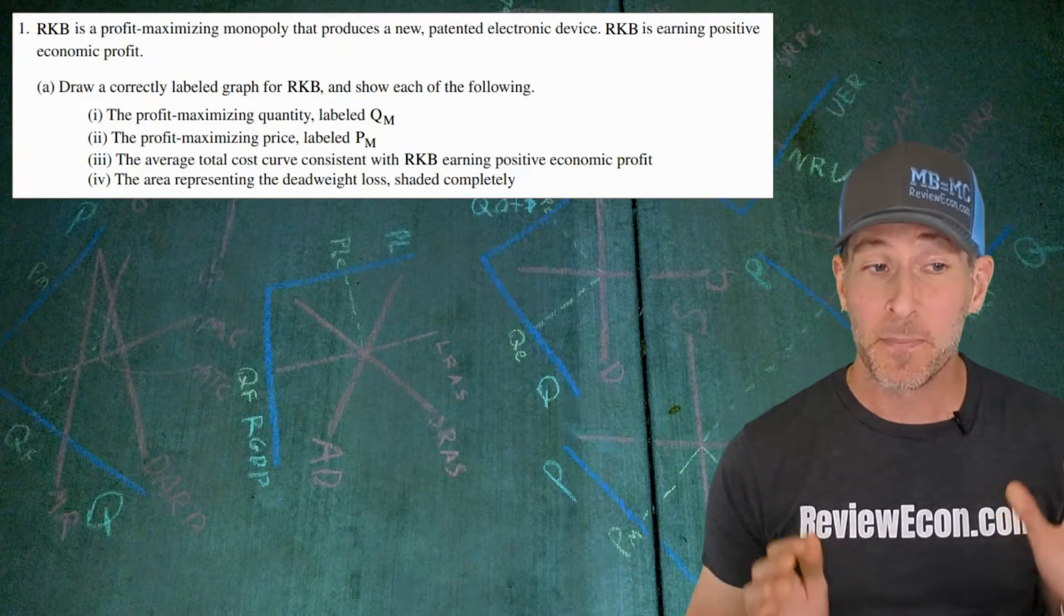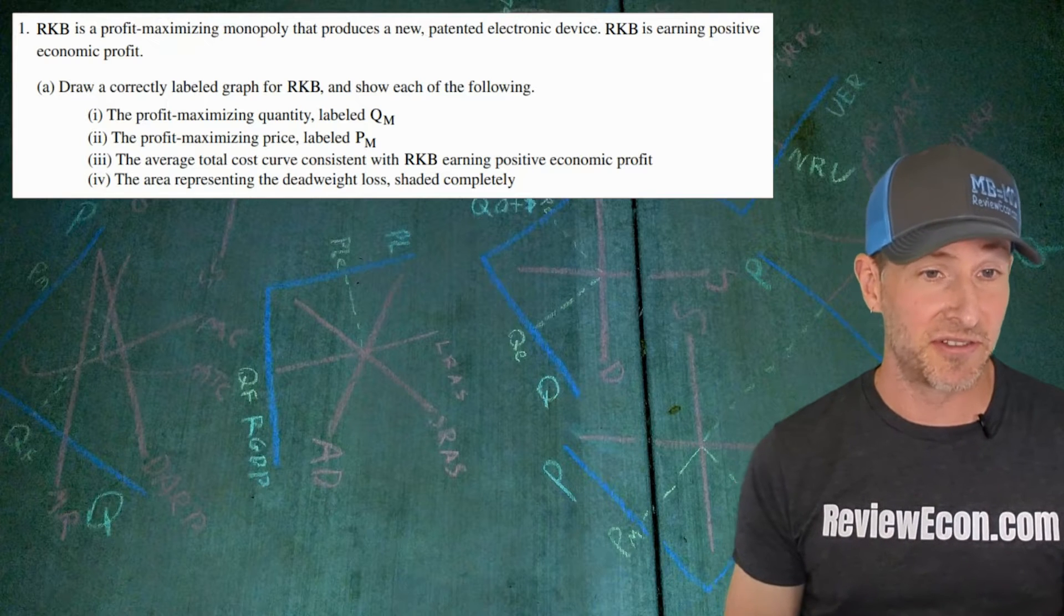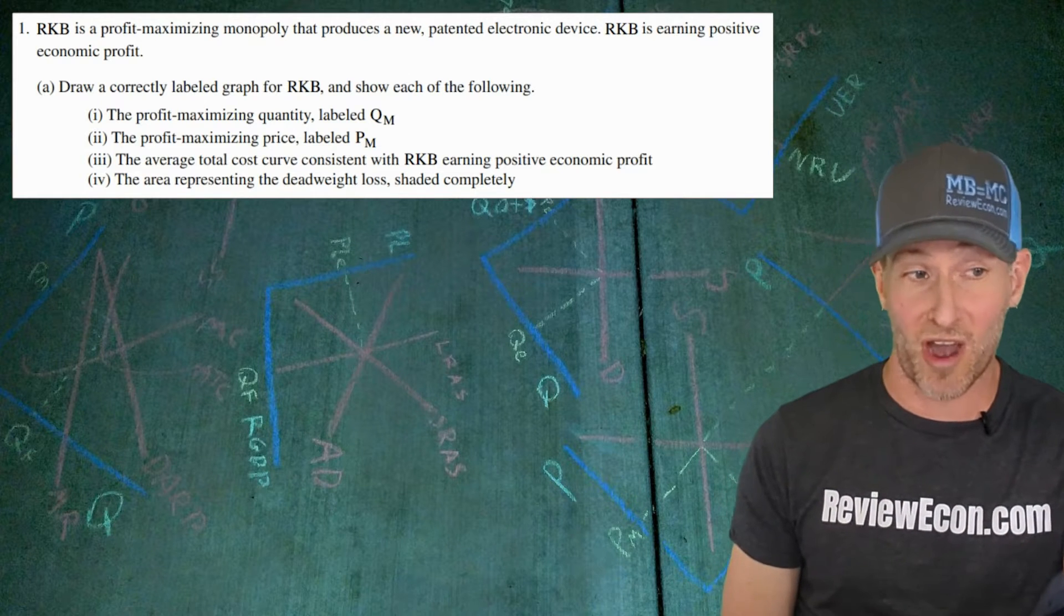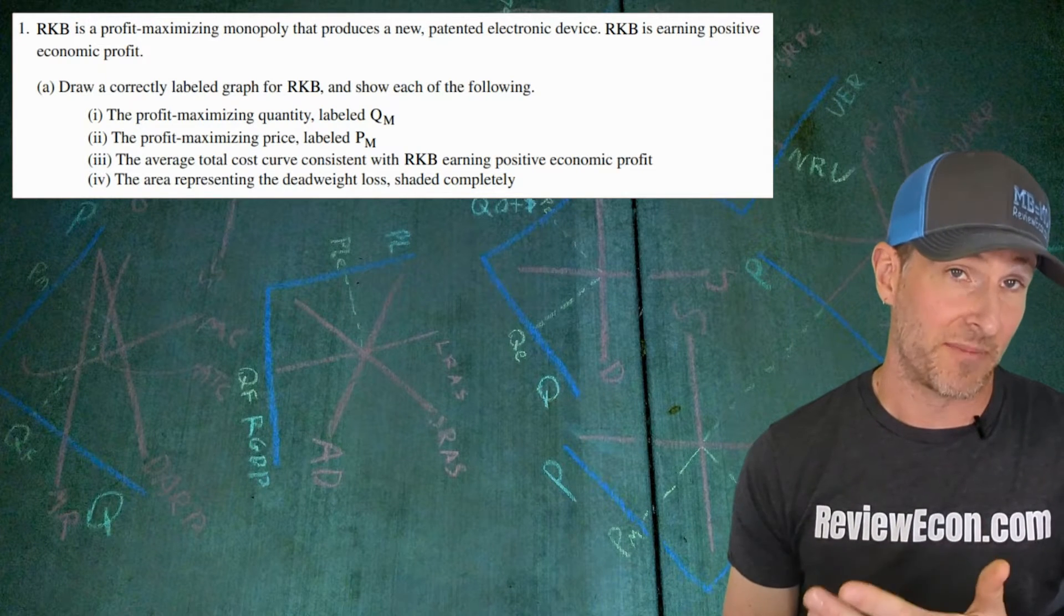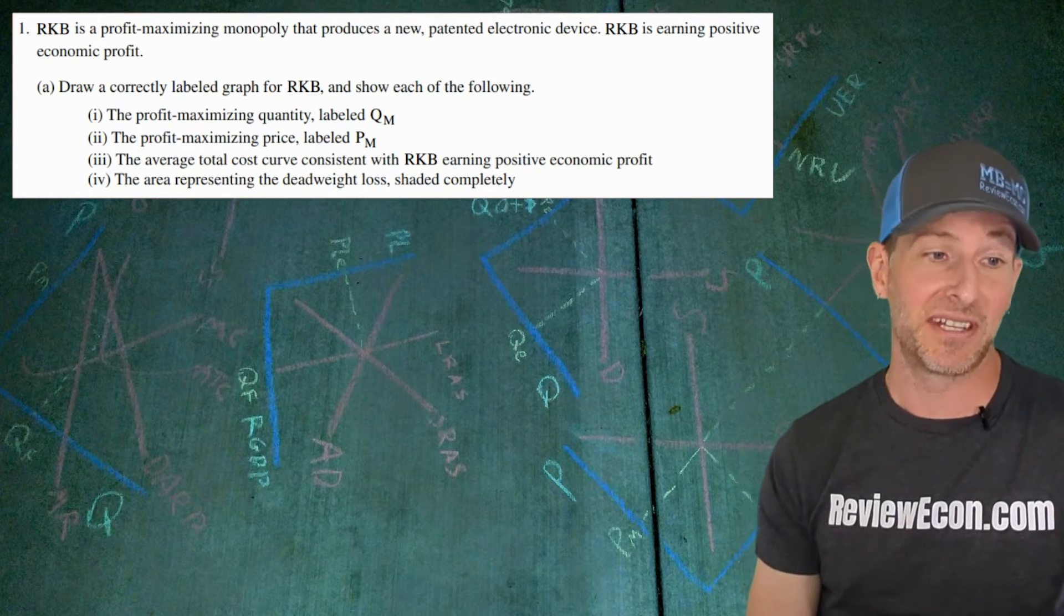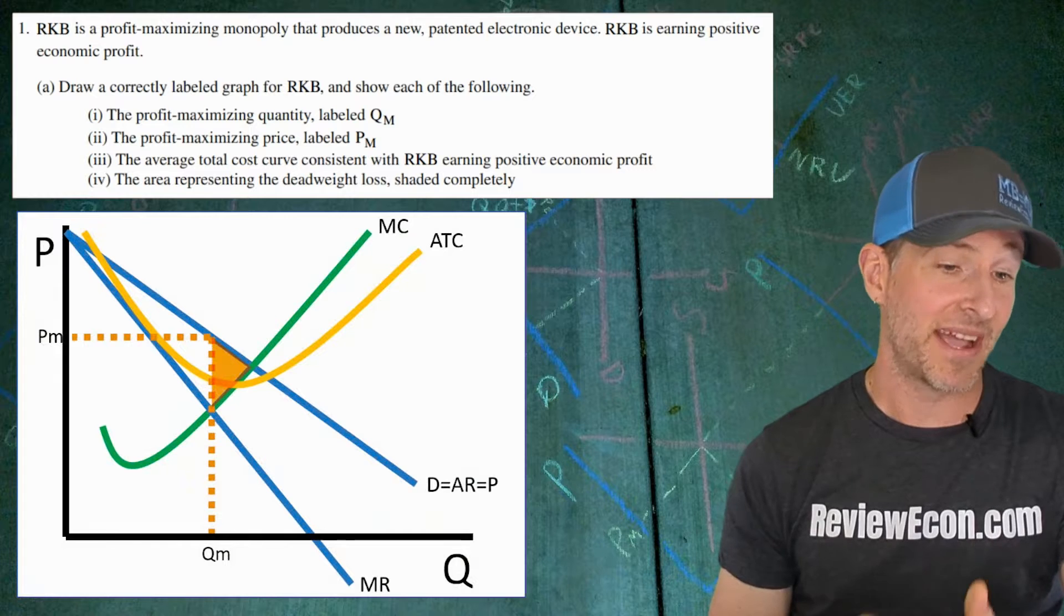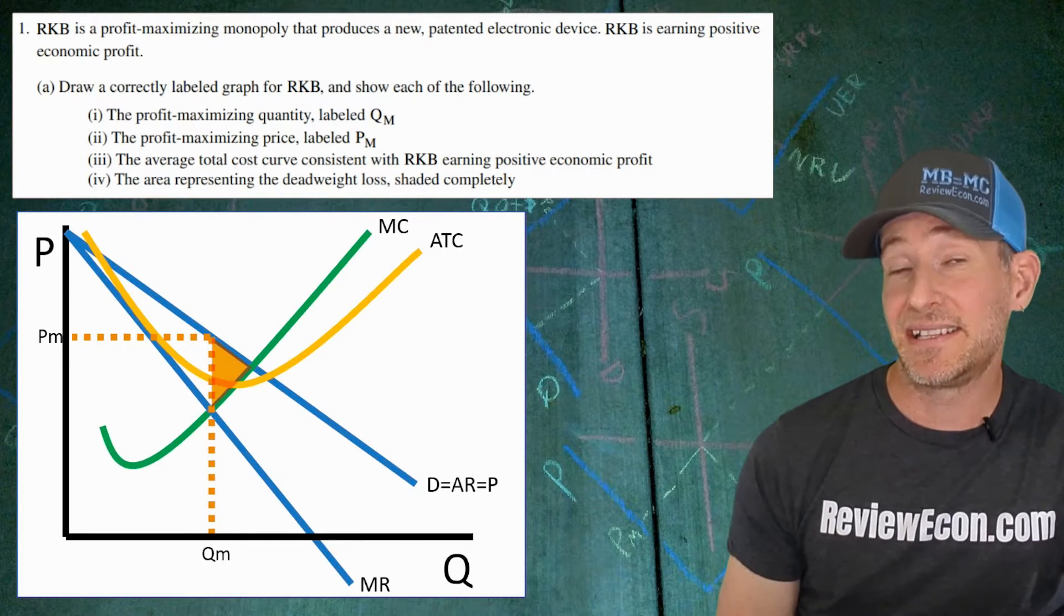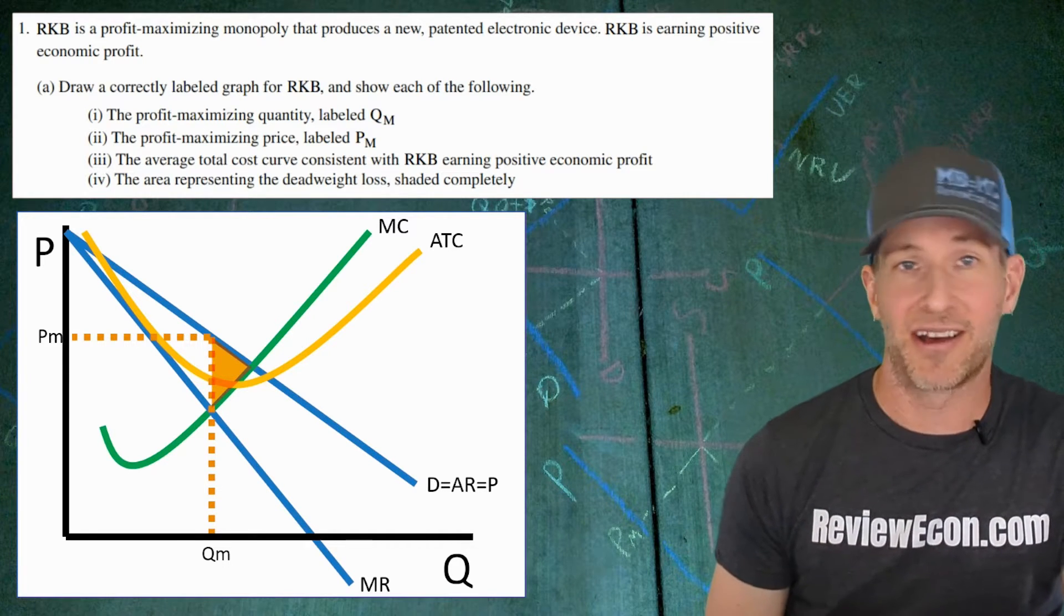We have a profit-maximizing monopoly. They have a new product, it's patented so that means there's a monopoly with high barriers to entry. Nobody else can produce this product and they are earning a positive economic profit. We're going to draw the graph for this monopoly that's earning a profit, label QM and PM, their profit-maximizing price and quantity, make sure the ATC is consistent with economic profit, and shade the deadweight loss. So here's that graph. We've got our downward-sloping demand curve with marginal revenue below, MR equals MC quantity with price above at the demand curve, and our ATC is below our profit-maximizing price indicating profit, with our triangle of deadweight loss right there.